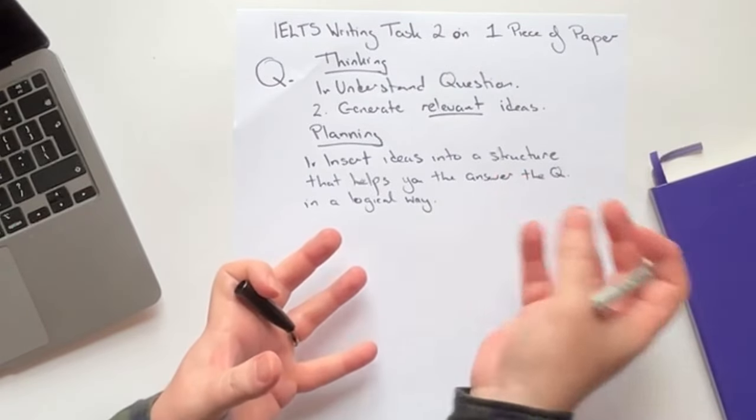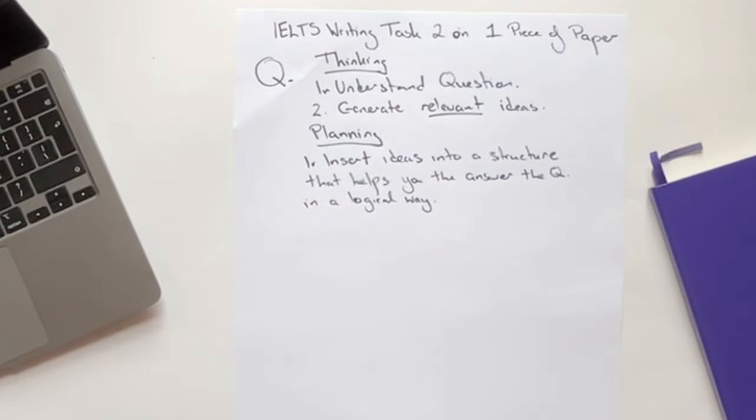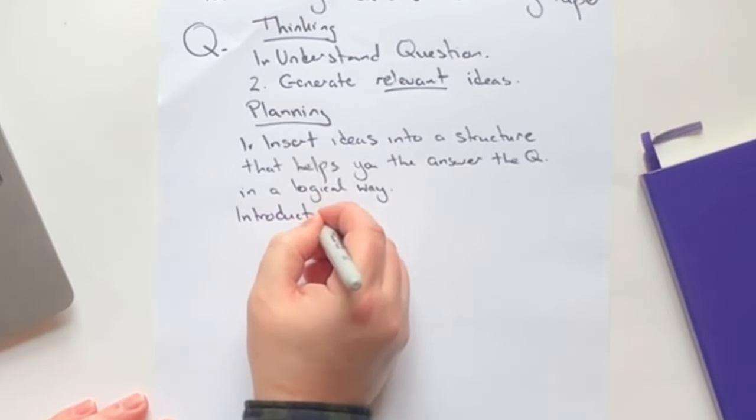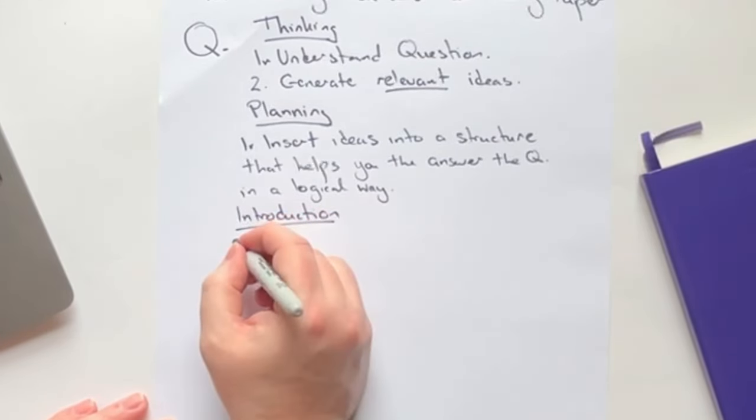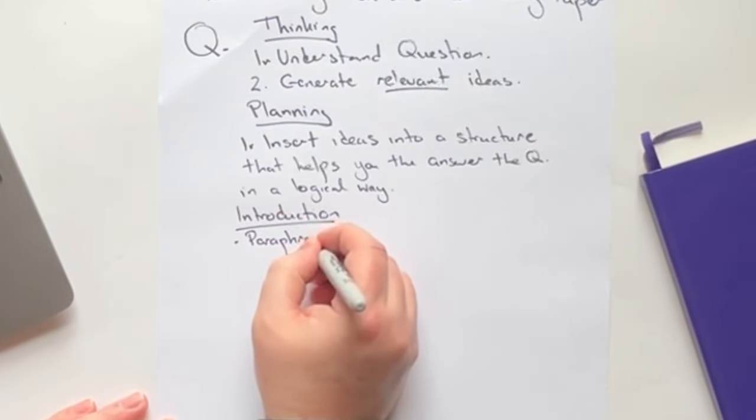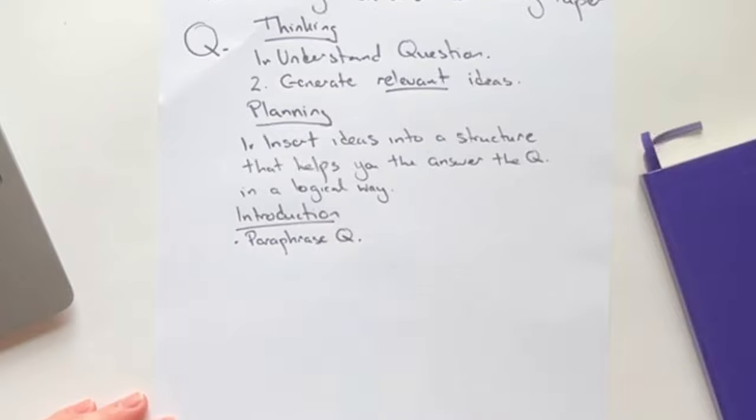You're going to take that, and then you're going to put your ideas into that structure. So in general, that is going to look something like this. First thing you're going to do is write your introduction. And the first thing you're going to do is to paraphrase the question.